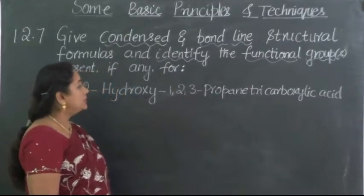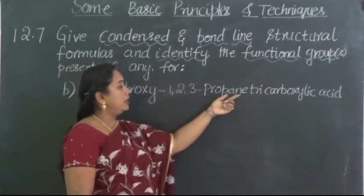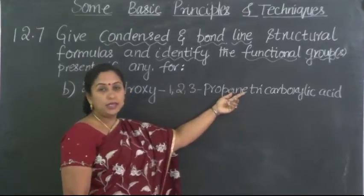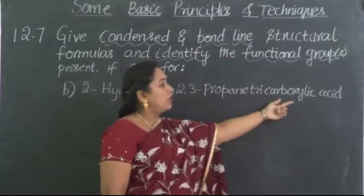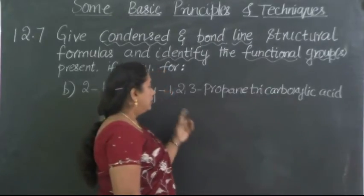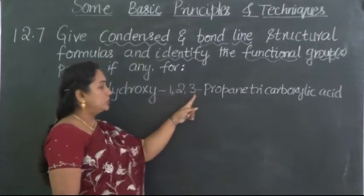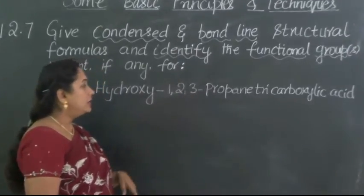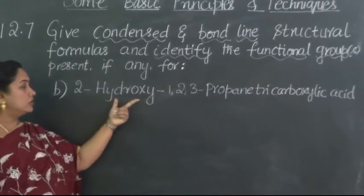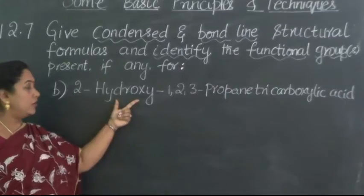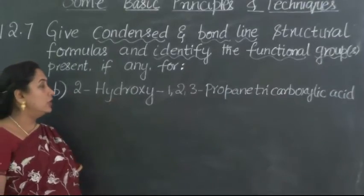Let us understand the structure given to us. This is containing propane and it is saturated. This is containing three carboxylic acid groups attached to all three carbon atoms at positions 1, 2, 3. Not only that, with respect to the second carbon atom, this structure is also containing the hydroxyl group or the alcohol OH as the functional group.